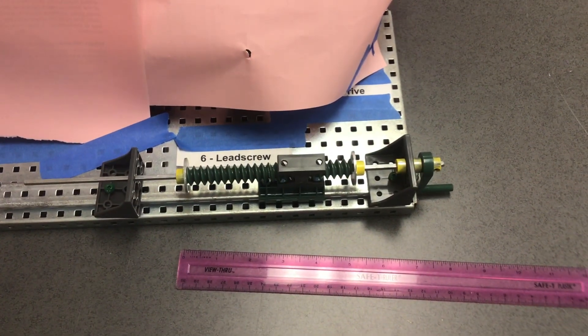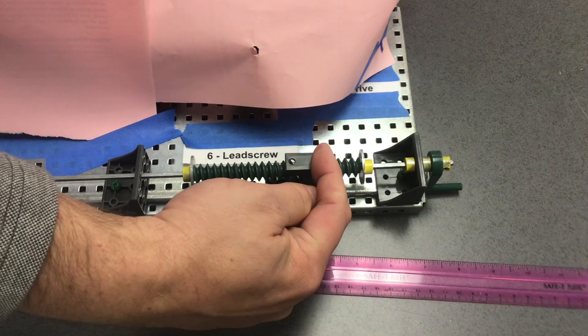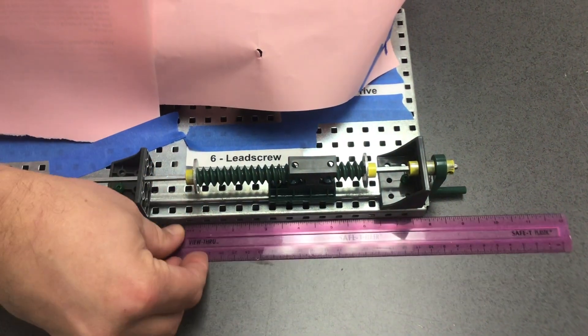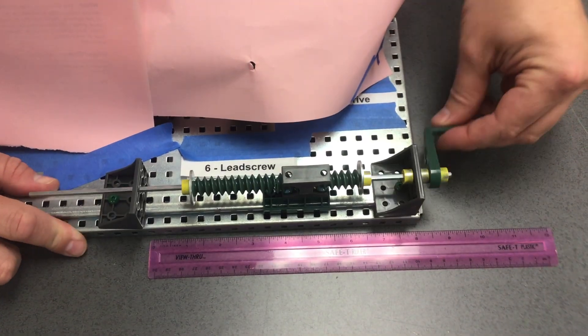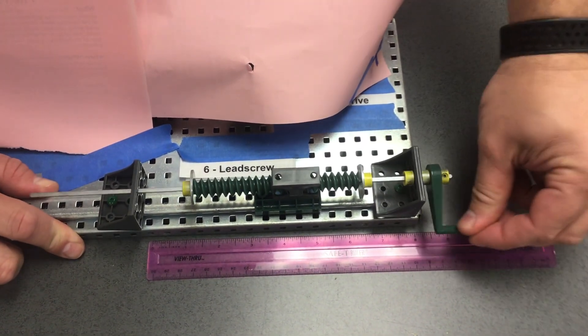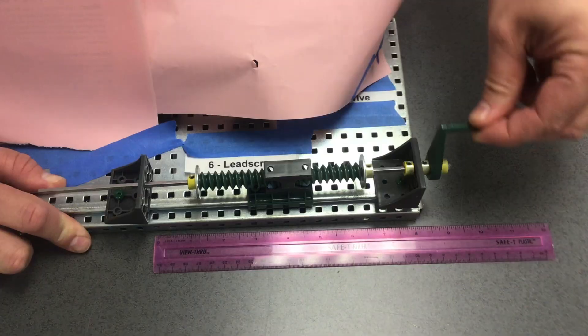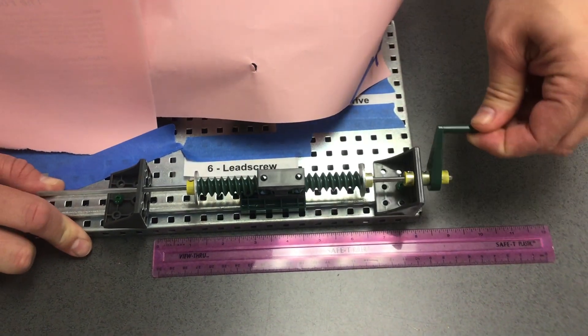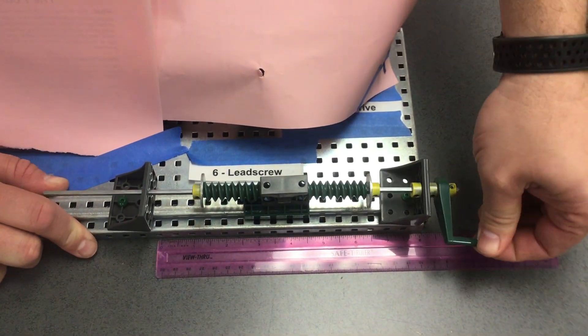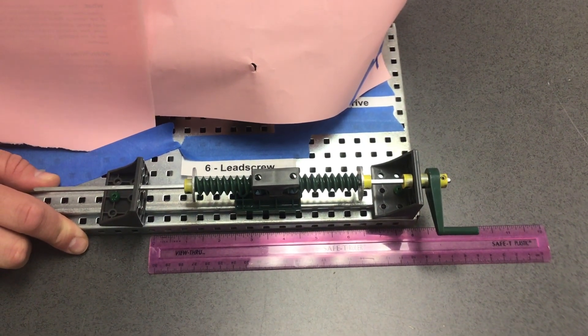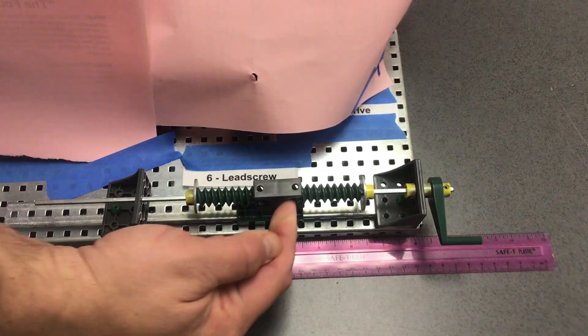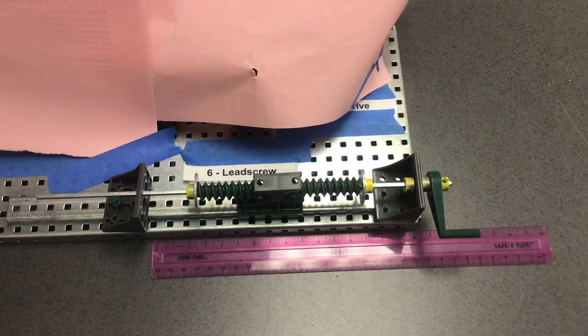How many revolutions of this crank will it take for this to go one inch on my ruler? We'll count. One, two, three, four, almost five. About 4.75 rotations to make the carriage travel one inch.